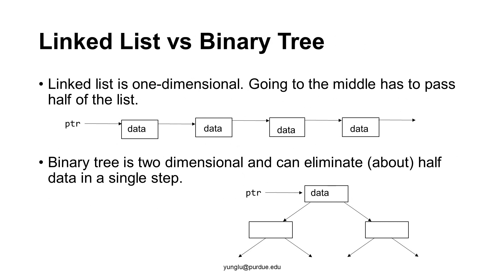For a linked list, if we want to go to the middle of the list, we have to pass through many nodes. This problem is the same regardless of whether the linked list is a doubly linked list or not. A doubly linked list is still a one-dimensional structure. In contrast, a binary tree is a two-dimensional structure.